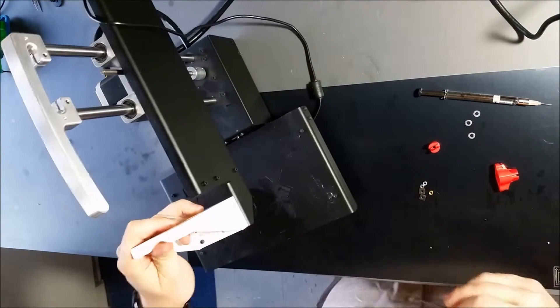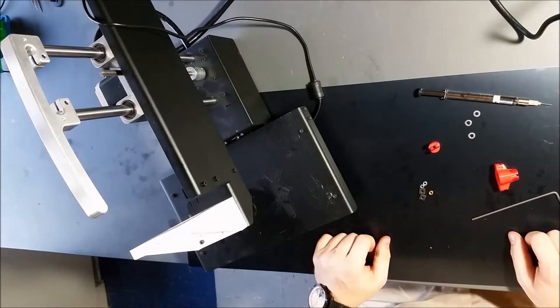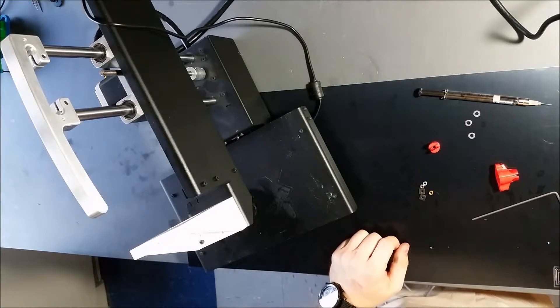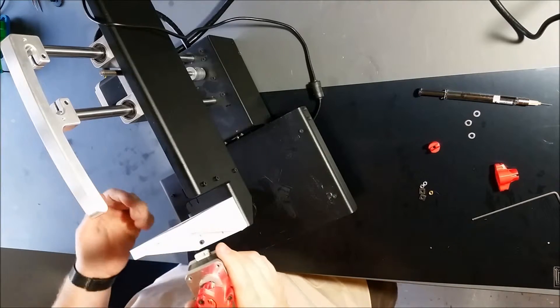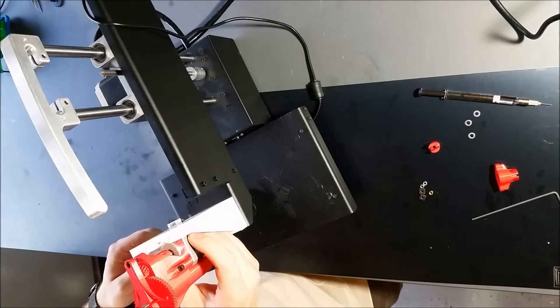Alright, so the mount is secured to the PrinterBot Simple Metal. And we're going to take the Replostruder and put it on it. This is really simple. Here's the Replostruder, here are two holes. Basically what you're going to do is take two bolts and attach it like this.